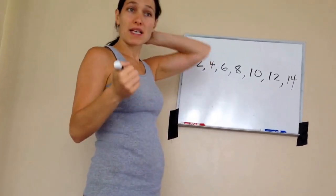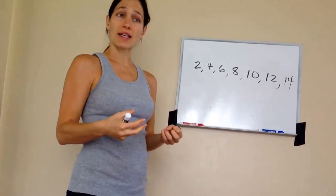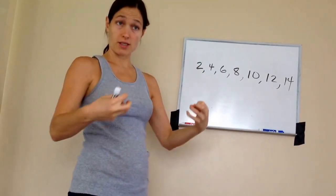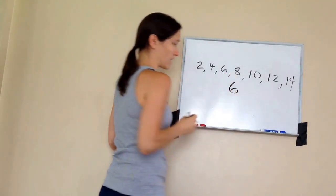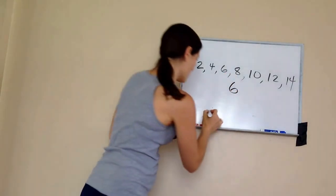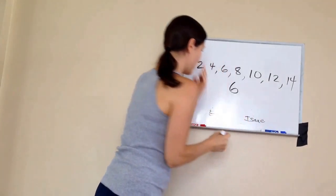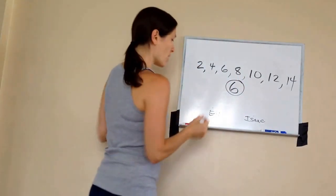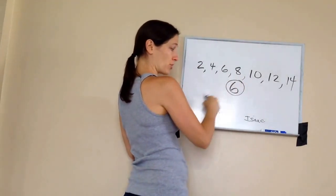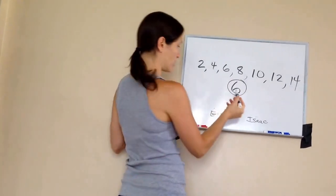But what makes a number even? Let me show you. It's if it's able to divide evenly or balanced. For example, let's just take six. And let's say Eli and Isaac were down here, and there were six pancakes. Can I distribute or divide six pancakes evenly? Let's try.